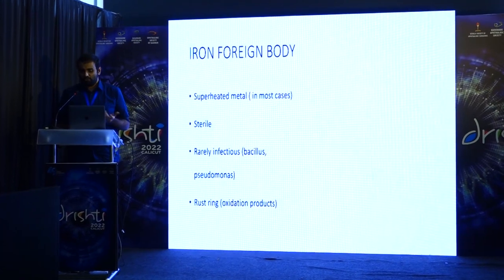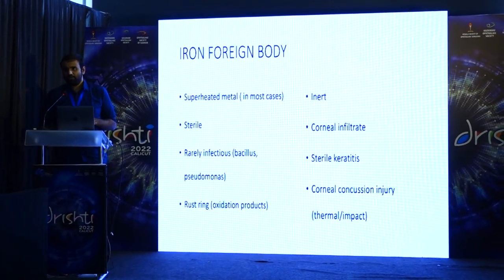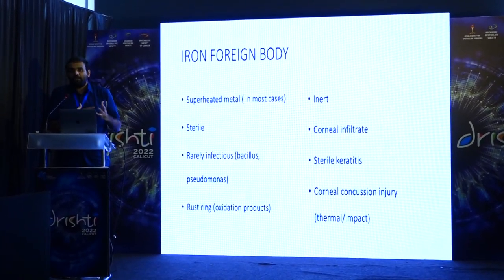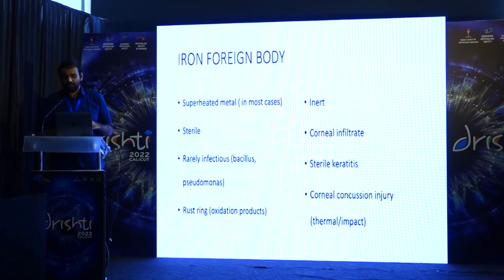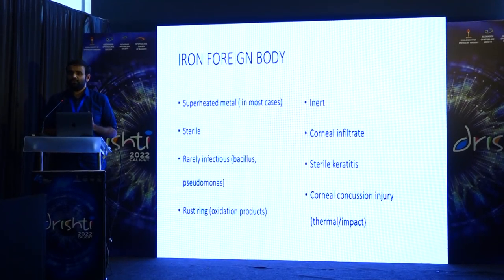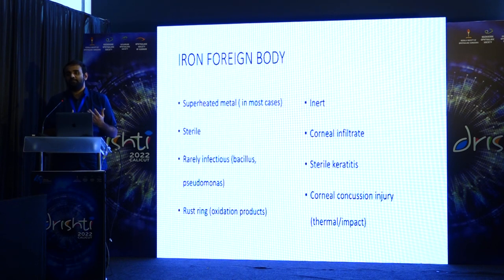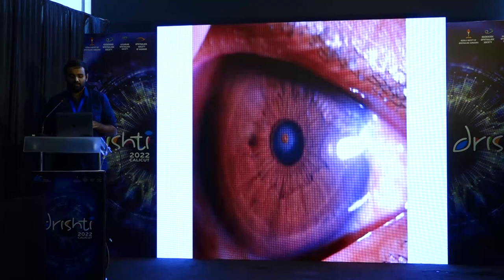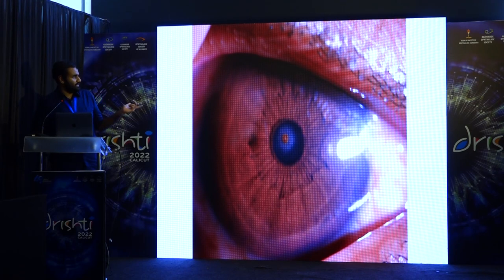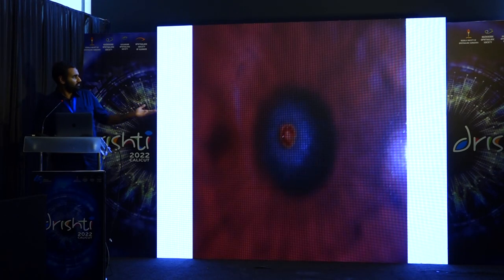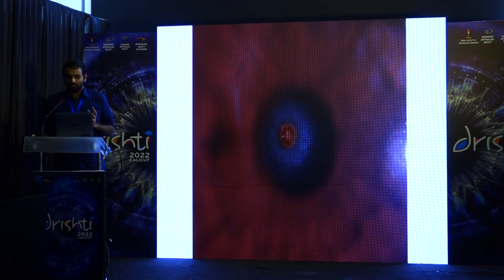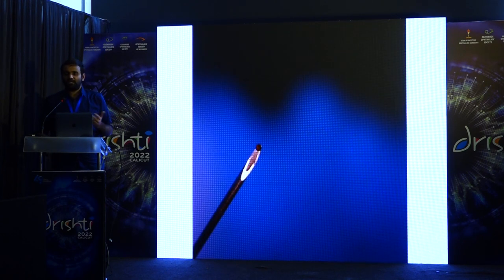How I classify a foreign body: inert, associated with infiltrate, sterile keratitis, or corneal concussion injury from thermal or impact. An inert foreign body — there is just a little scarring around it but the eye is quiet — you pull it off with a 30-gauge needle and it comes off in toto with no remnant left behind.